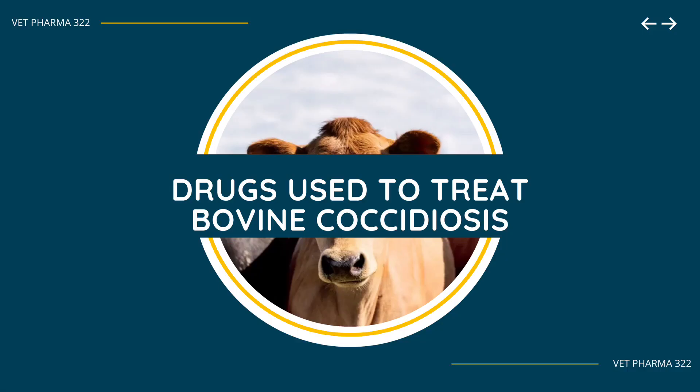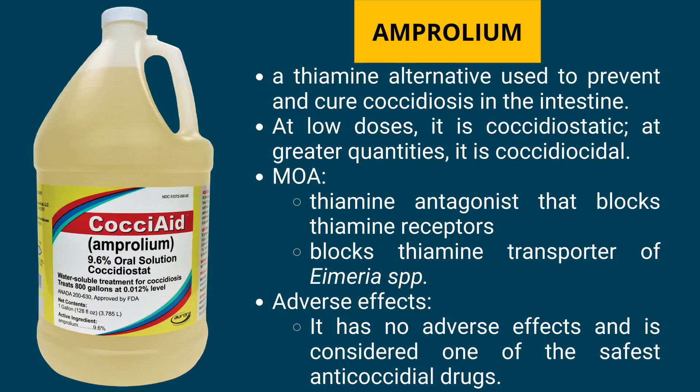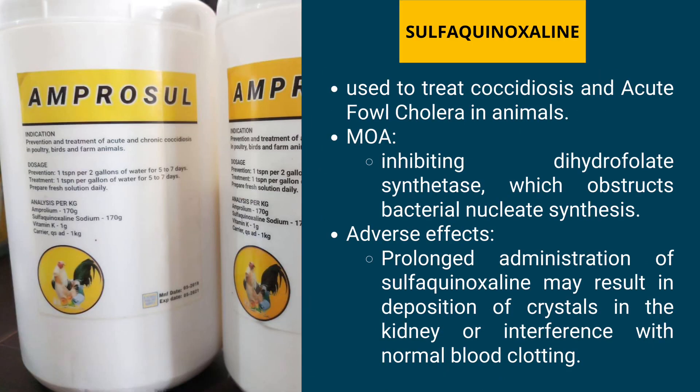The first drug used to treat bovine coccidiosis is Amprolium, a thiamine analogue used to prevent and cure coccidiosis in the intestine. Its mode of action is thiamine antagonism, which blocks thiamine receptors. It has no adverse effects and is considered one of the safest anticoccidial drugs.